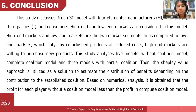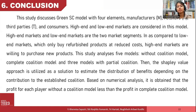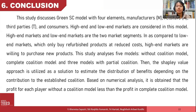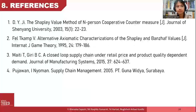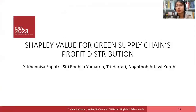Finally, we have constructed five different models: without coalition, complete coalition, and three models with different partial coalitions. The Shapley value approach is utilized to estimate the distribution of benefits depending on the contribution to the established coalition. Based on numerical analysis, the profit for each player without a coalition is less than the profit in a complete coalition model. These are the references used in this study. Thank you so much for your attention.